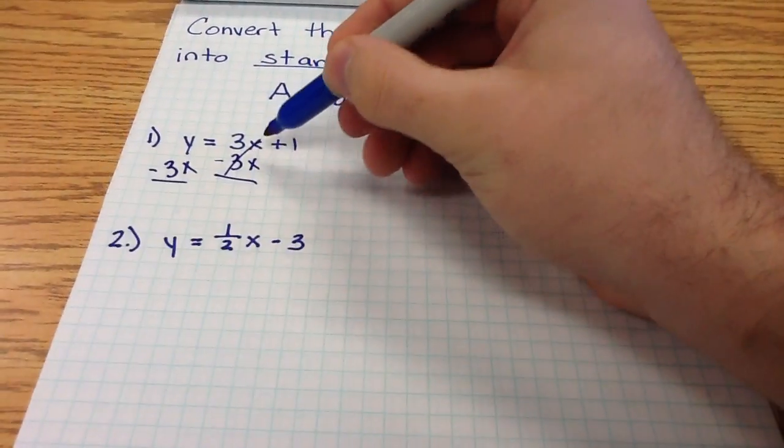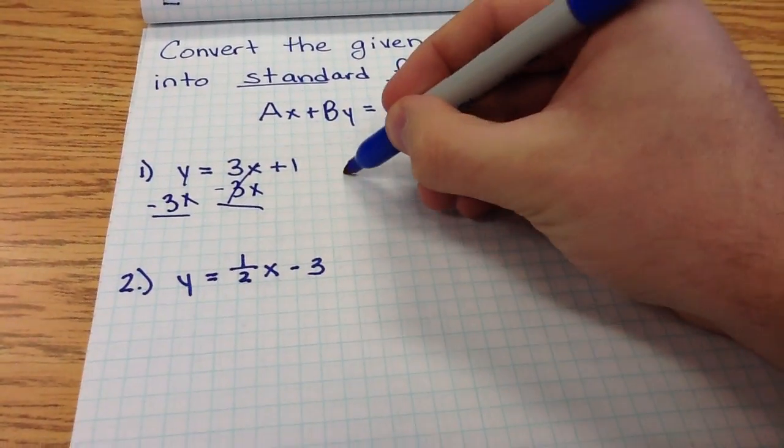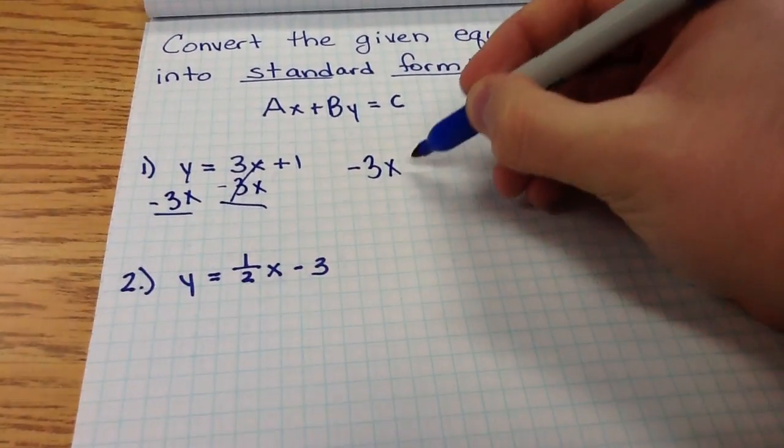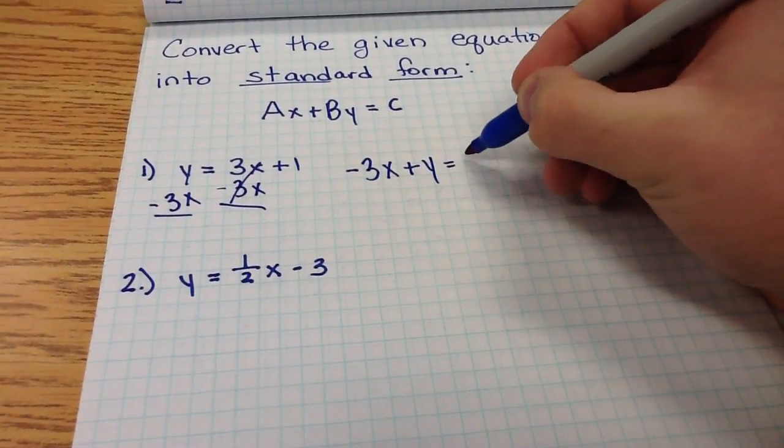The 3x's cancel, and I get standard form: negative 3x plus y equals 1.